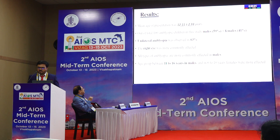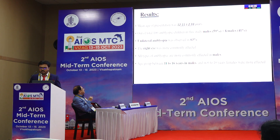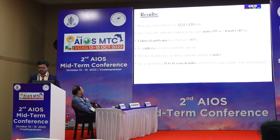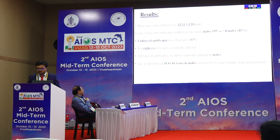Results of our study: mean age of presentation was 12 plus or minus 3 years. In total 100 patients, males were 59 percent and females were 41 percent. Males were more affected than females. Bilateral amblyopia was observed in 63 percent of cases. Right eye was more commonly affected, and all types of amblyopia were more commonly seen in males. Age group between 11 to 16 years in males and 6 to 13 years in females were more affected.